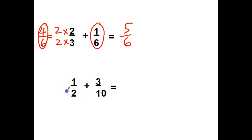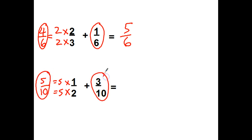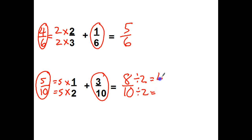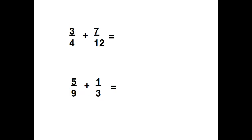2 times what equals 10? Times 5. Bottom times 5, so top times 5. 1 half is really the same as 5 tenths. 5 tenths plus 3 tenths equals 8 tenths. We simplified this back on one of the other problems — they're both even, so I can divide them by 2. 8 divided by 2 equals 4, and 10 divided by 2 equals 5. Another one — stop the video and you try it out.